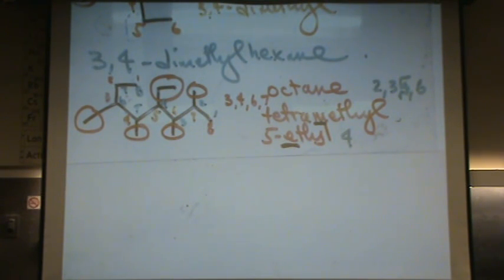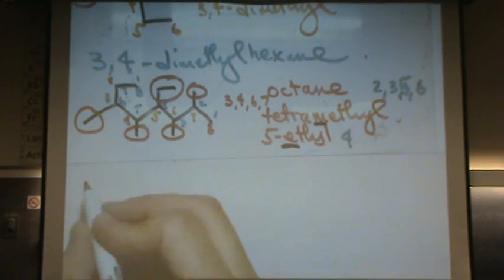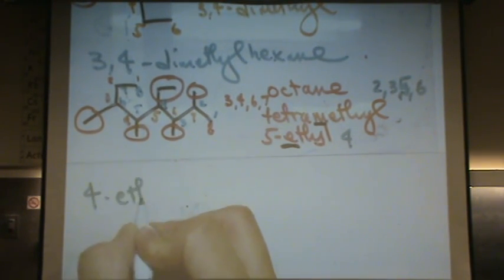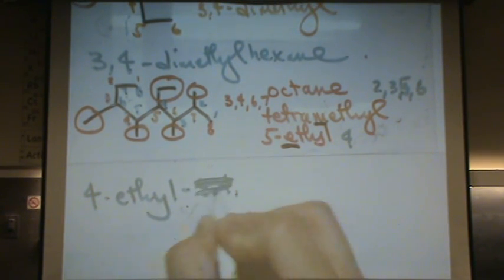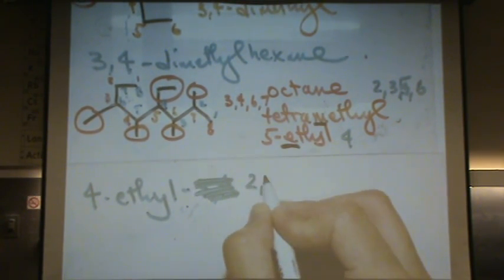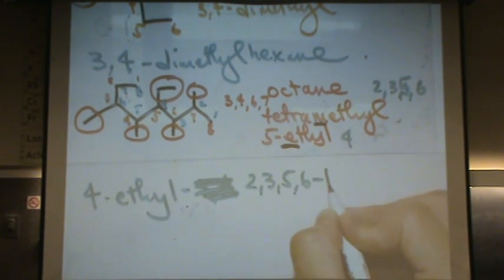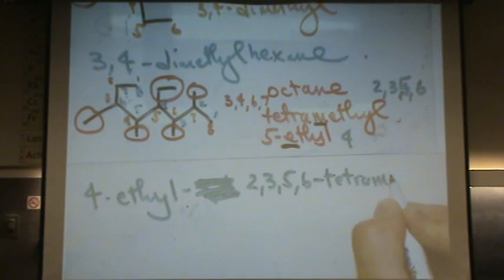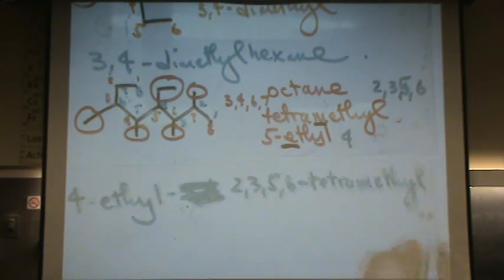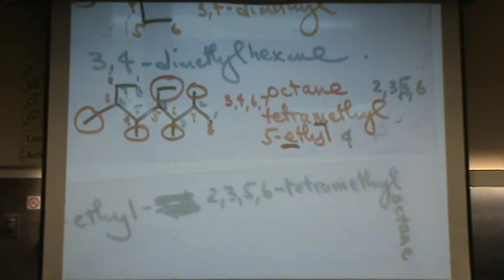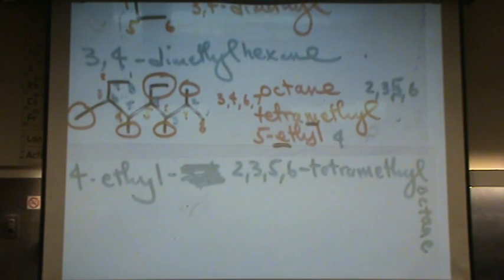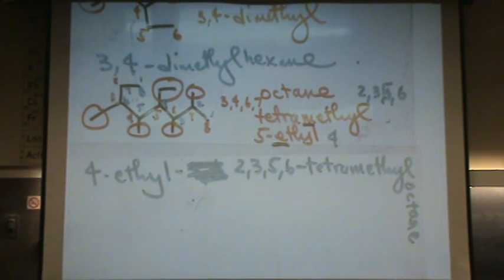So, I'm going to use the green. It'll give me the lower set of numbers. So, this is called 4-ethyl-2,3,5,6-tetramethyloctane. Still one word. That's all one word. So, it'd be called four ethyl, two, three, five, six tetramethyloctane. Any questions on that one?